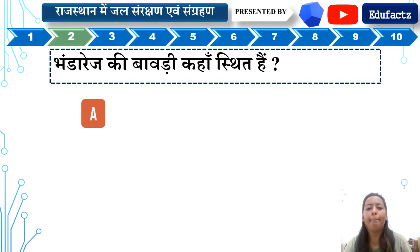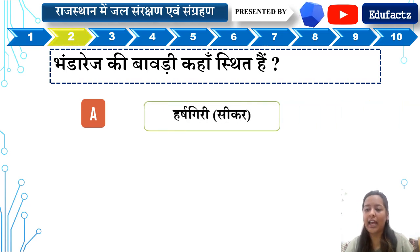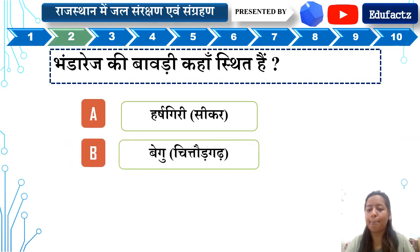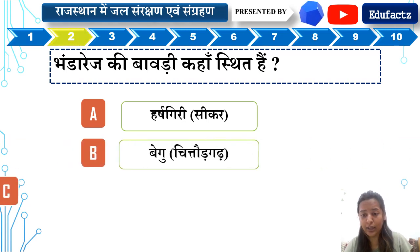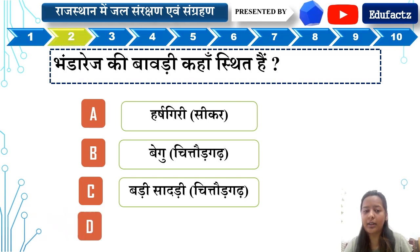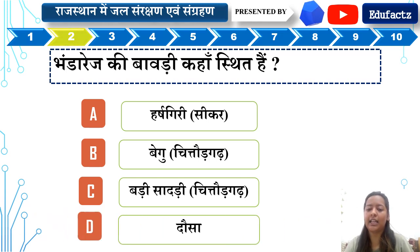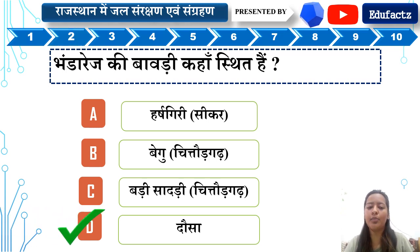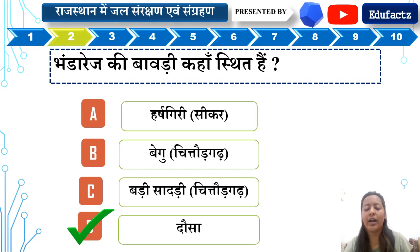Question number two: Bhandrej ki Bavadi kahan sthit hai? A — Harshigiri Sikar, B — Begu Chittorgarh, C — Bhandrej Dosa. The right answer is Option B.